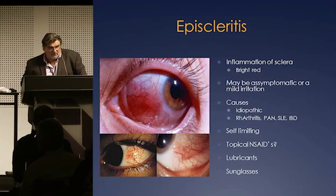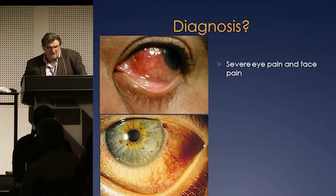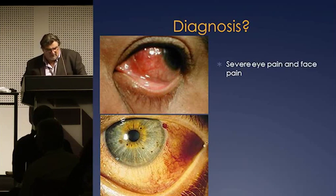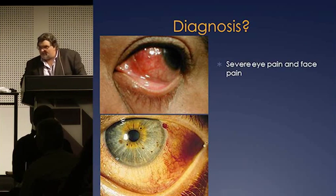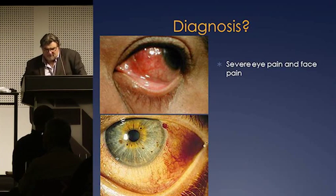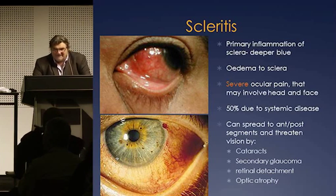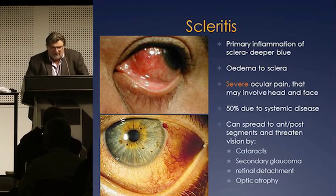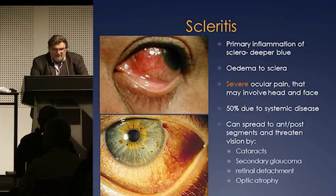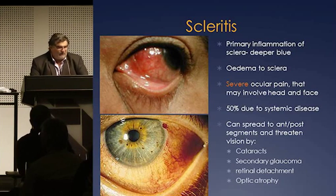Onto severe eye pain with significant injection — all the scleral vessels are dilated. In this particular disease it can be segmental or diffuse, and about 50% of cases are associated with systemic disease. This is scleritis — a significant infection of the sclera. They'll get severe ocular pain and this injection. Symptoms: severe pain, photophobia, no discharge, and extremely tender if you touch the sclera.